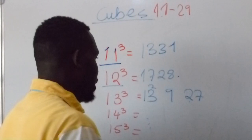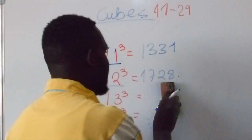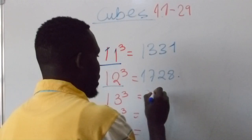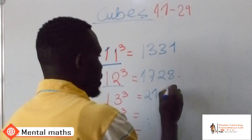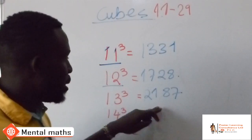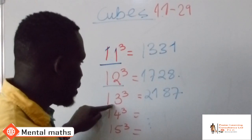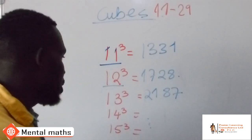So 2187 becomes the answer here. This is what now becomes a cube of, if you cube 13.